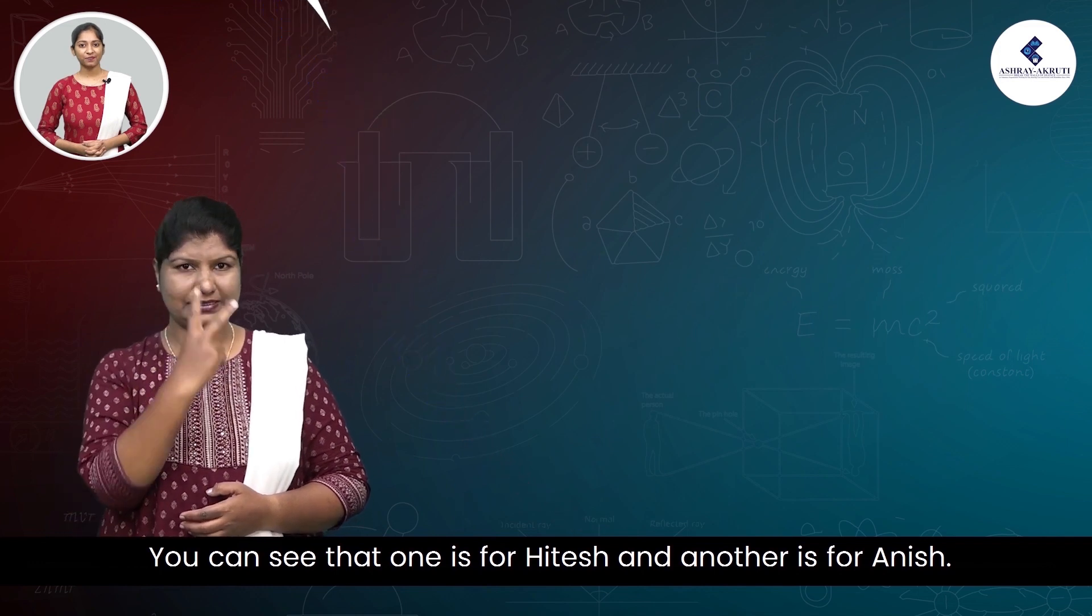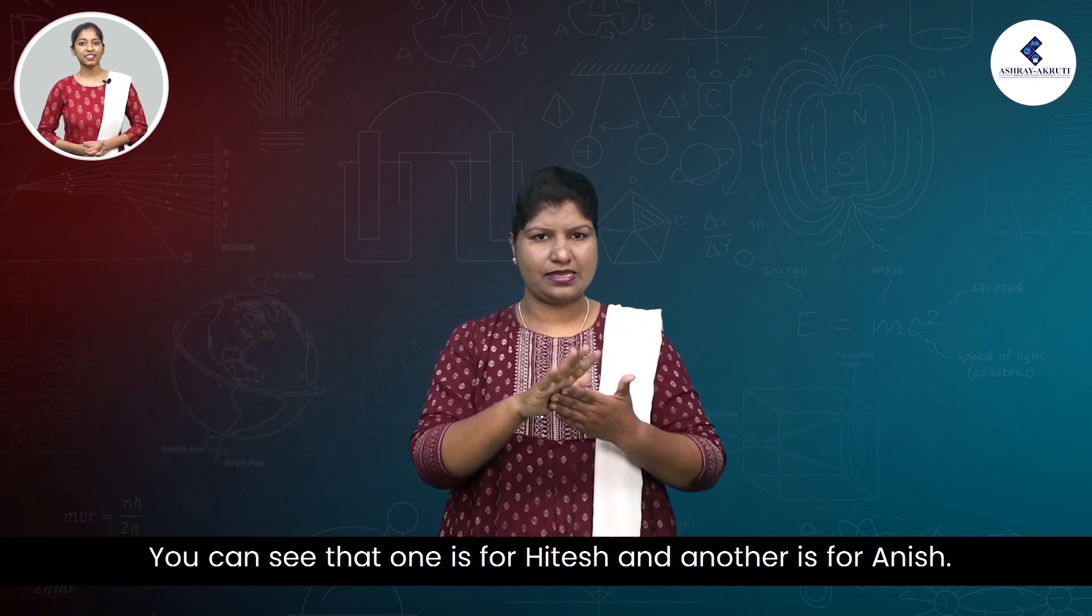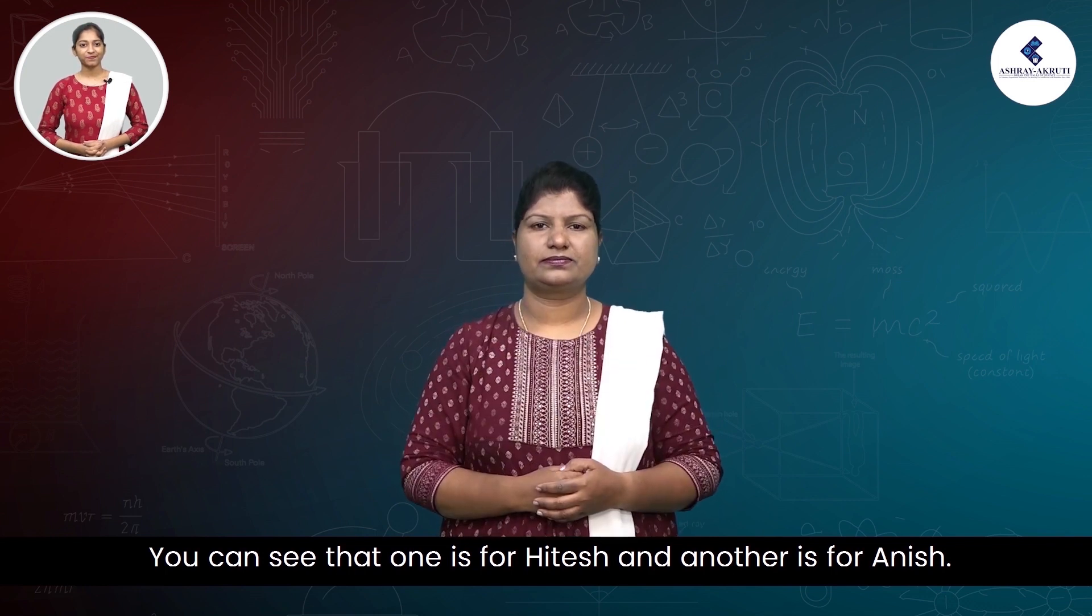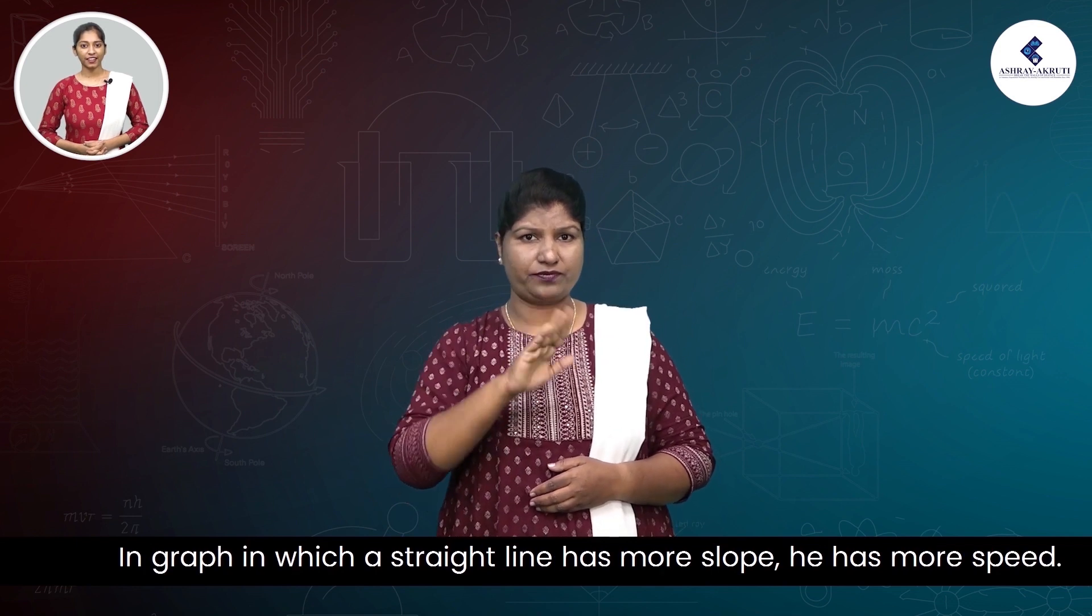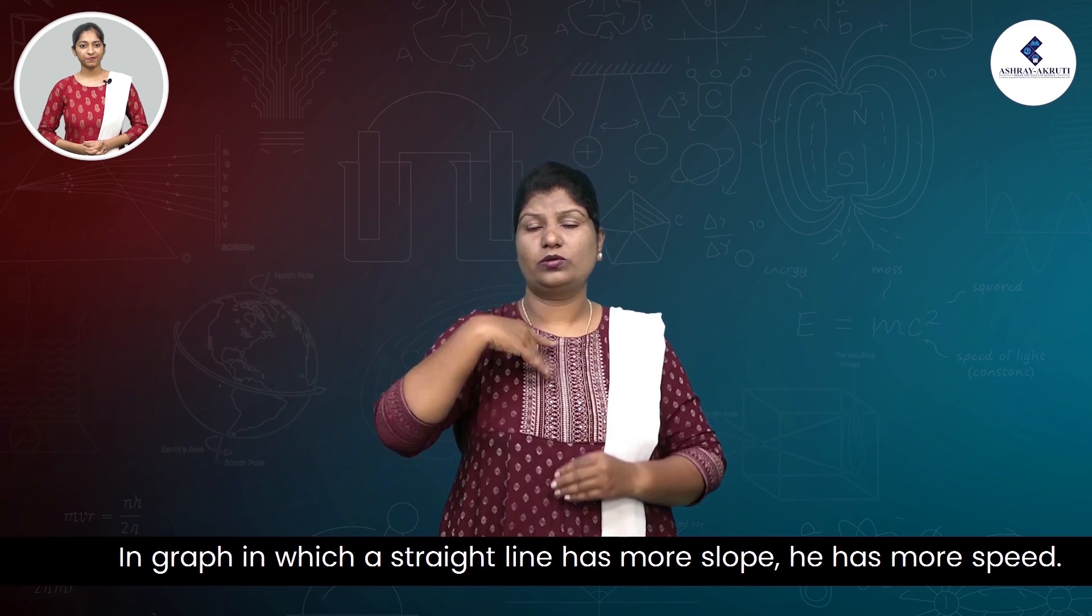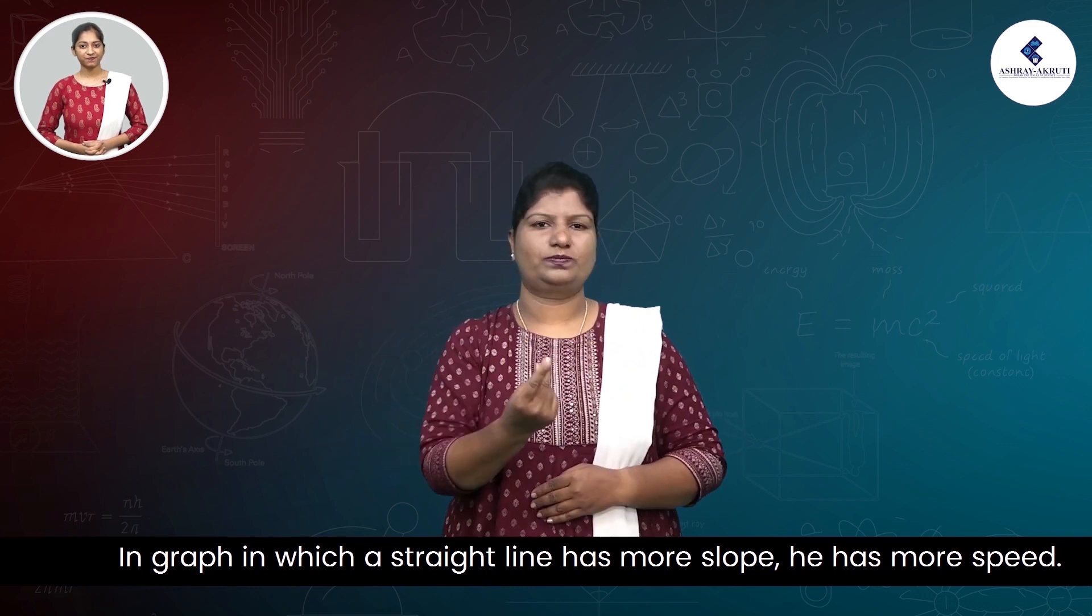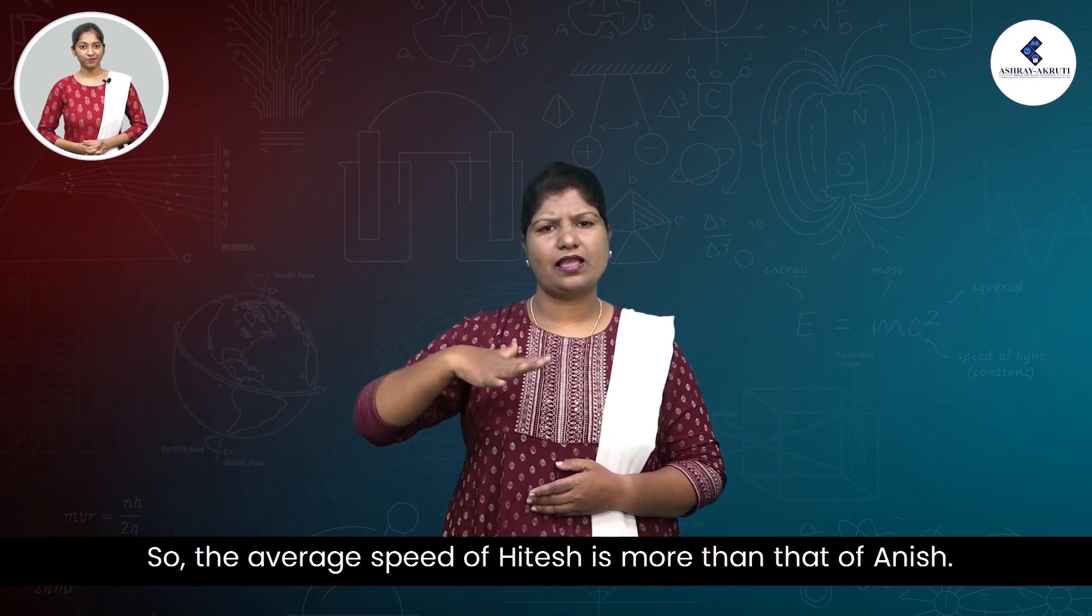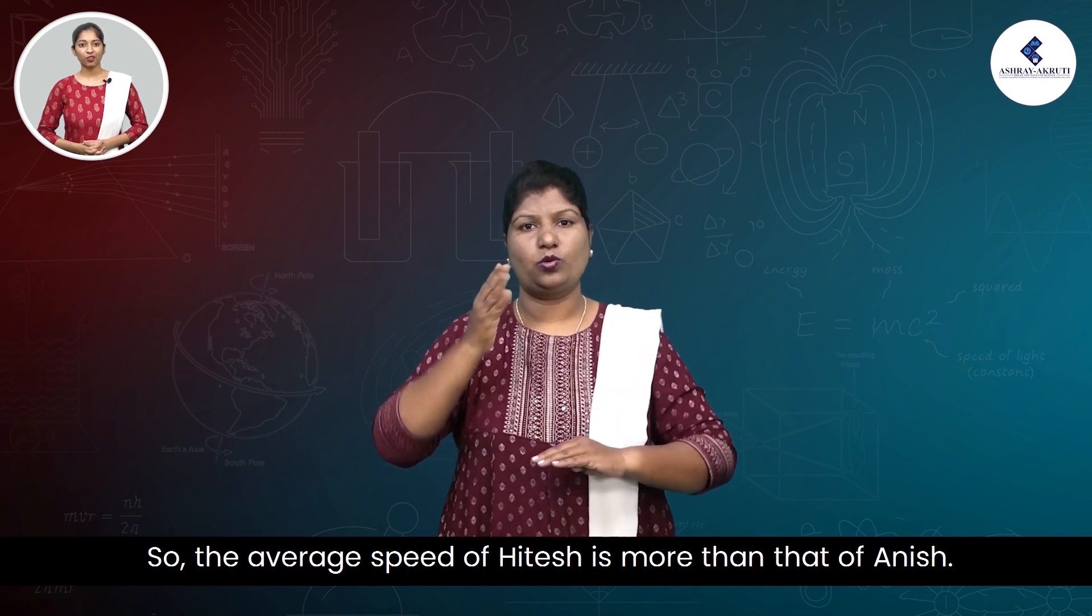You can see that one is for Hitesh and another is for Anish. In a graph, the straight line which has more slope has more speed. So, the average speed of Hitesh is more than that of Anish.